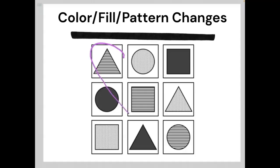If we take a look at our 1, 5, 9 diagonal, we can see that all three of these elements share the same pattern. They have horizontal stripes.